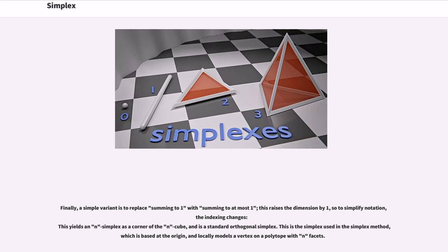Projecting onto the simplex is computationally similar to projecting onto the L^1 ball. Finally, a simple variant is to replace summing to 1 with summing to at most 1. This raises the dimension by 1, so to simplify notation, the indexing changes. This yields an n-simplex as a corner of the n-cube, and is the standard orthogonal simplex. This is the simplex used in the simplex method, which is based at the origin, and locally models a vertex on a polytope with n facets.